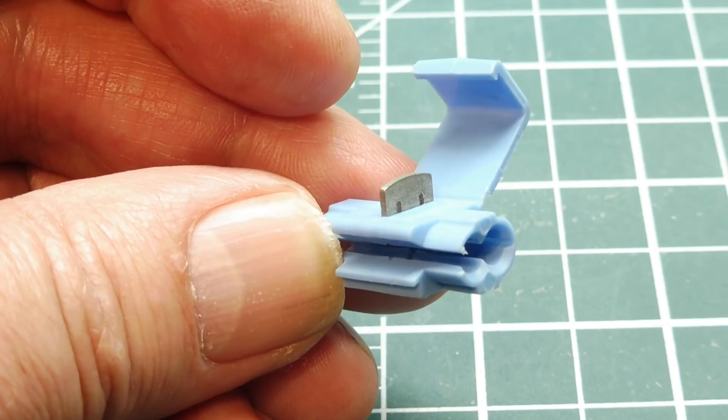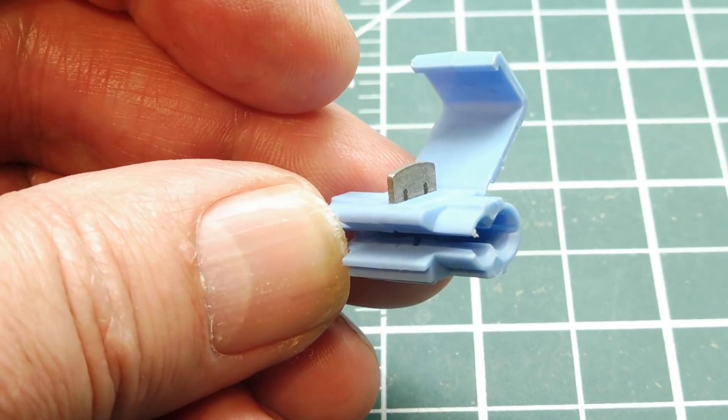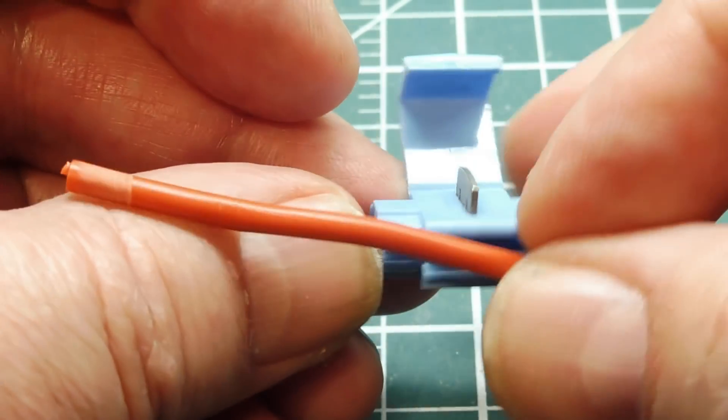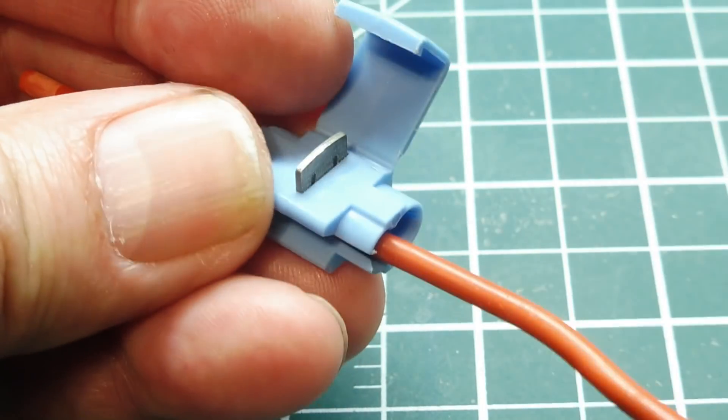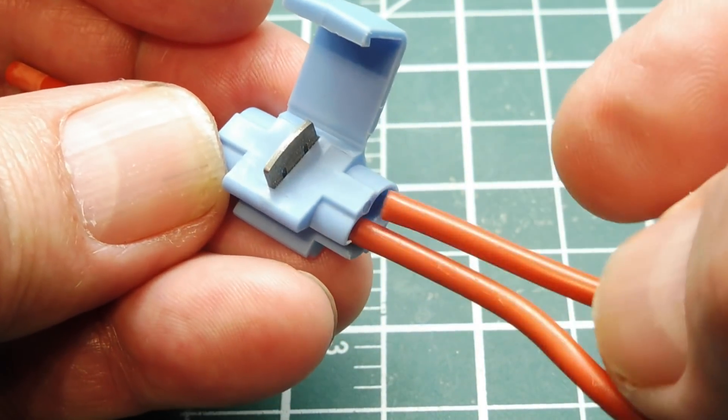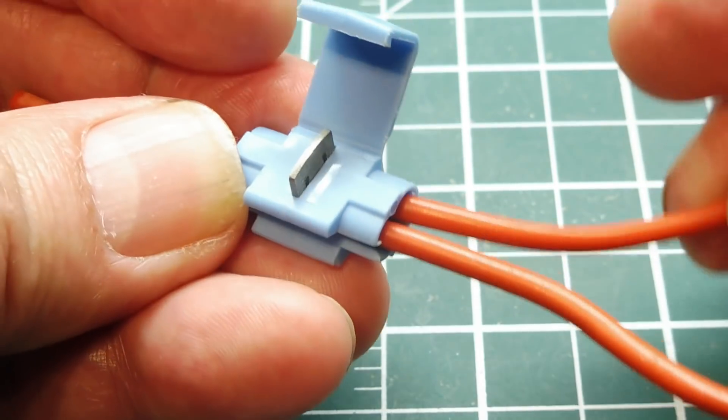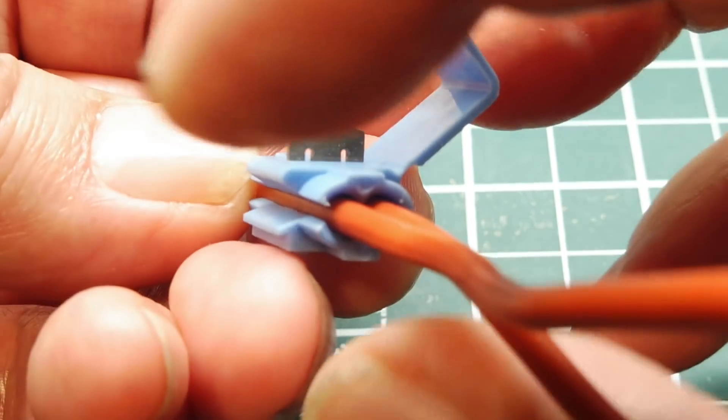I'll demonstrate how to apply one of these wire taps. You take the tap, and you snap it over the wire to be tapped into. Then you apply the wire that you want to tap to, into the crimper. You can see this blade here.